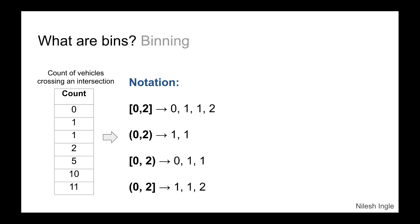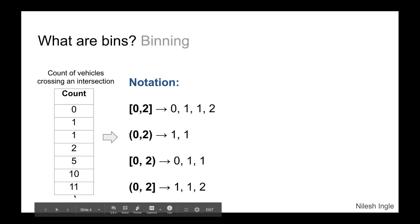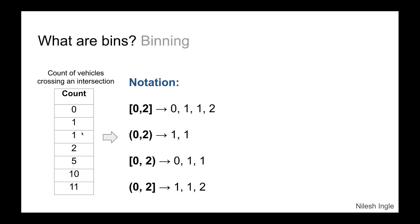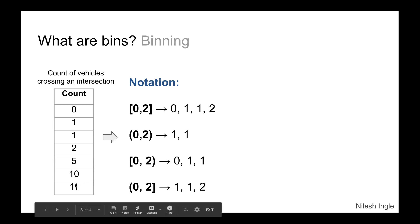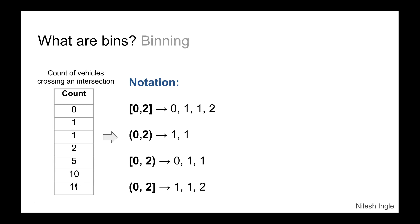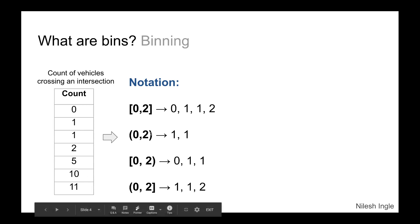Binning is a process in which we create bins. Here's an example: on the left-hand side we have a count of vehicles crossing an intersection — sometimes zero, sometimes one, sometimes eleven vehicles. Imagine thousands of such rows of data. One way to look at this data is by discretizing it — putting each data point into a bin and looking at those bins together. By looking at the histogram or distribution, we can get an idea of what the data looks like.